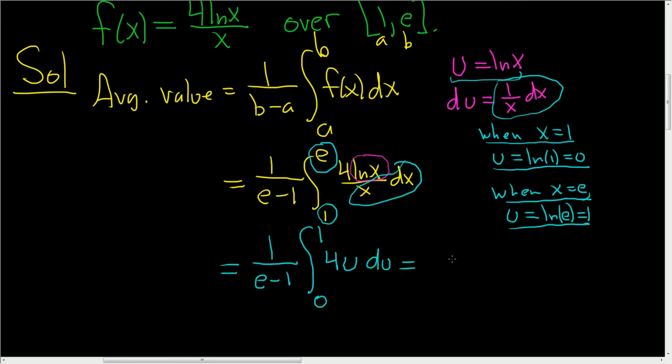So integrating, we end up with 1 over e minus 1. That's a constant, it hangs out. We use the power rule. This is 4u squared over 2, and we're going from 0 to 1.